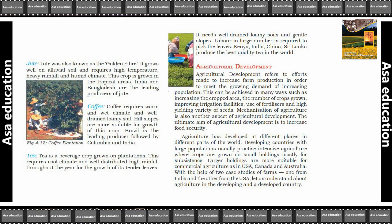Agricultural development refers to the efforts made to increase farm production in order to meet the growing demands of the increasing population. This can be achieved in many ways such as increasing the crop area, the number of crops grown, improving irrigation facilities, and use of fertilizers and high yielding variety of seeds.